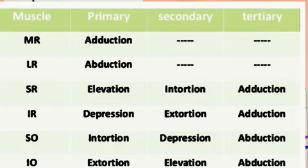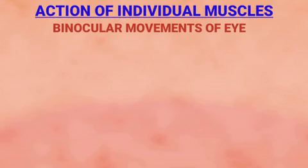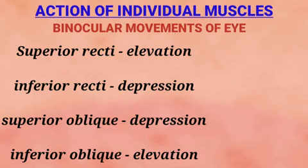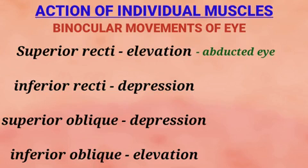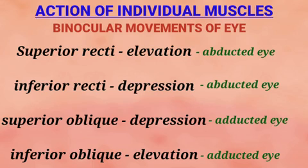These movements in the primary position of gaze are helpful mainly for monocular eye movements or ductions. In case of binocular movement of both eyes, elevation is produced by the superior rectus in the abducted eye and by the inferior oblique in the adducted eye. Similarly, the inferior rectus produces depression in the abducted eye and the superior oblique produces depression in the adducted eye. This concept will be used when discussing binocular eye movements or version movements.